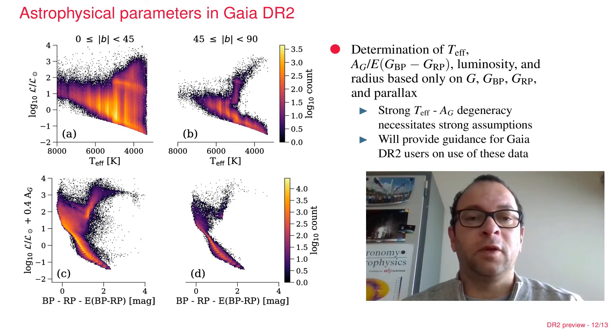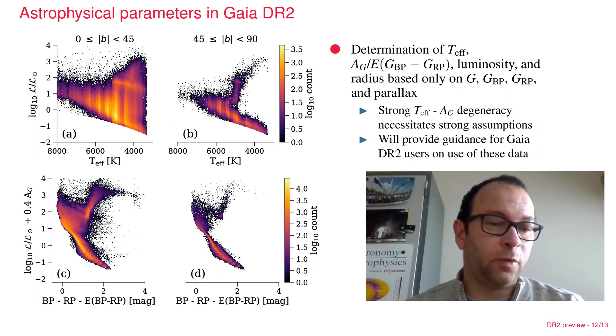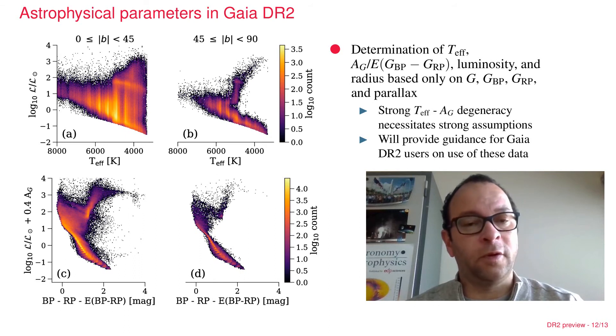This will be much improved in future releases when we can actually analyze the full prism spectrum instead of only the integrated broadband photometry. The plots on the bottom show luminosity versus color where the color has been corrected for the effects of extinction as determined within our own processing pipelines.